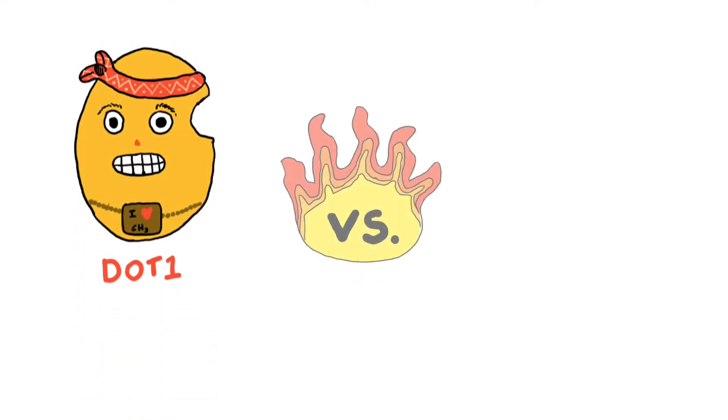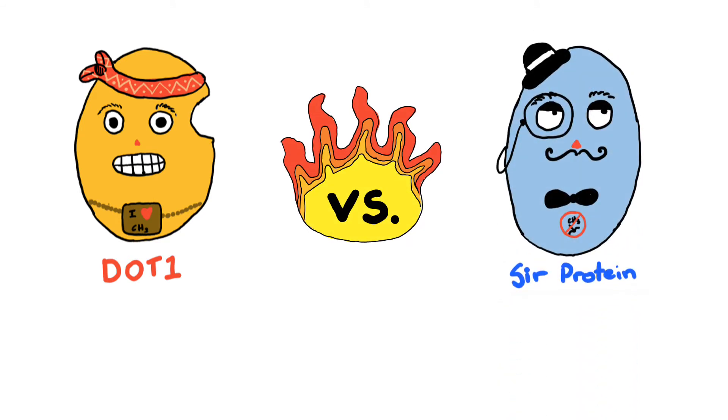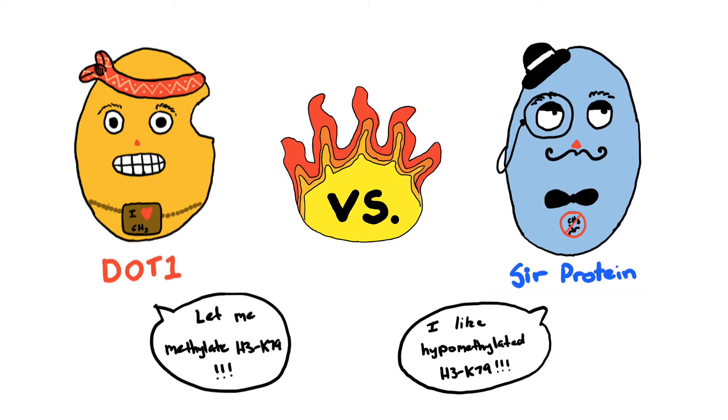DOT1 influences the behavior of silent information regulatory or CERB proteins. It was hypothesized that CERB proteins maintained a silent state by binding chromatin with hypomethylated H3K79, reducing the binding affinity of DOT1 and decreasing methylation.